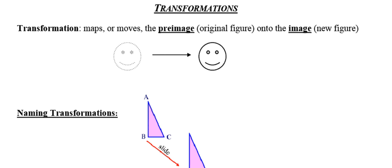So first of all, what is a transformation? A transformation is going to be something that moves or maps something called a pre-image. The pre-image is going to be the original or starting figure onto an image, and the image is going to be the new figure. So if I think about this in terms of start and end, the pre-image or the original is going to be where I started from and the image is going to be where I ended up after the transformation has occurred.